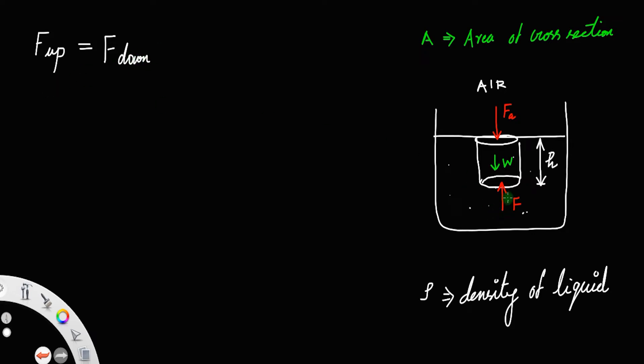The upward force is F, acting at the bottom of the cylindrical column. The downward forces are F_a and the weight of the liquid column.